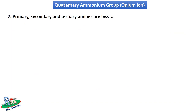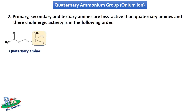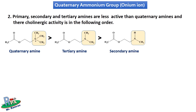The second SAR point is that primary, secondary, and tertiary amines are less active than quaternary amines. Their cholinergic activity follows this order: quaternary amines have the most cholinergic activity, followed by tertiary amines, then secondary amines, and primary amines have the least activity.